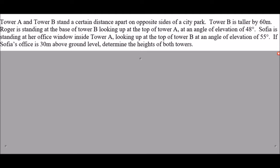The question says, Tower A and Tower B stand a certain distance apart on opposite sides of a city park. Tower B is taller by 60 meters. Roger is standing at the base of Tower B looking up at the top of Tower A with an angle of elevation of 48 degrees. Sophia is standing at her office window inside Tower A looking up at the top of Tower B at an angle of 55 degrees. If Sophia's office is 30 meters above ground level, determine the heights of both towers.